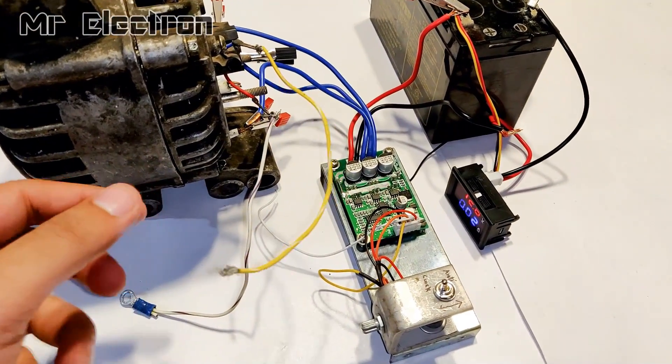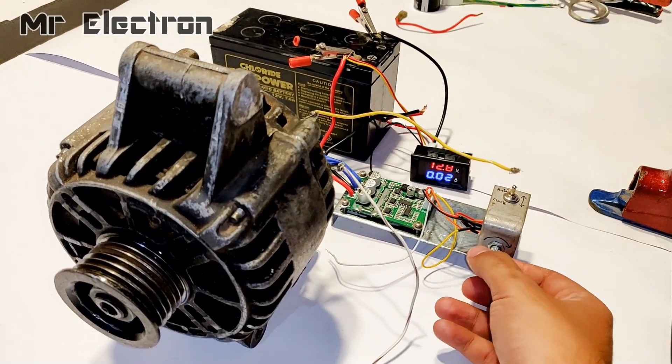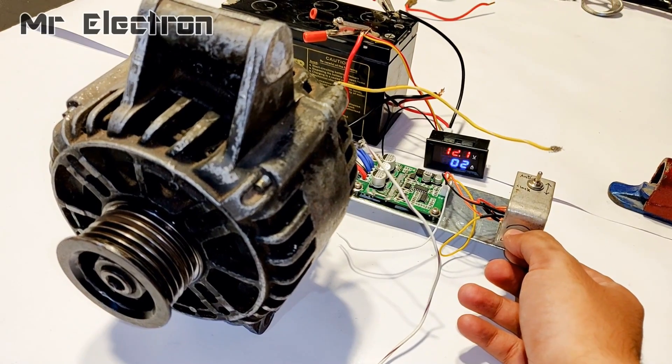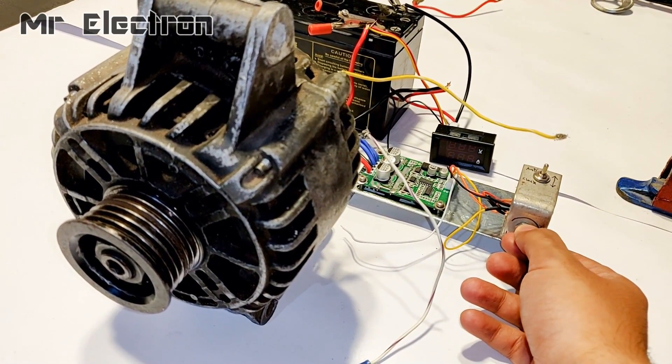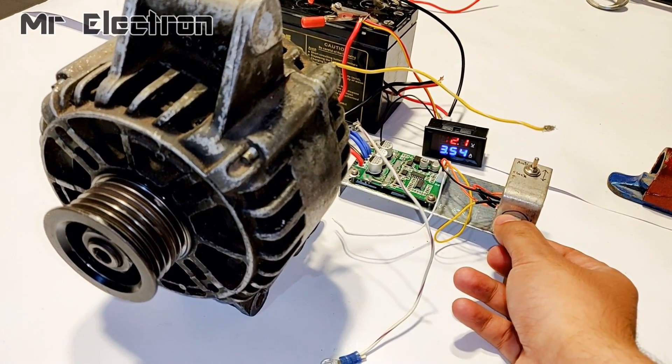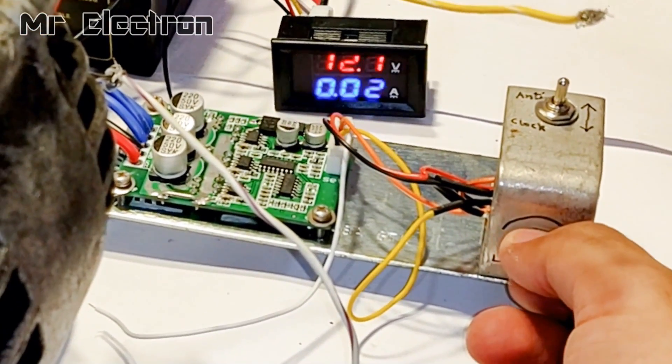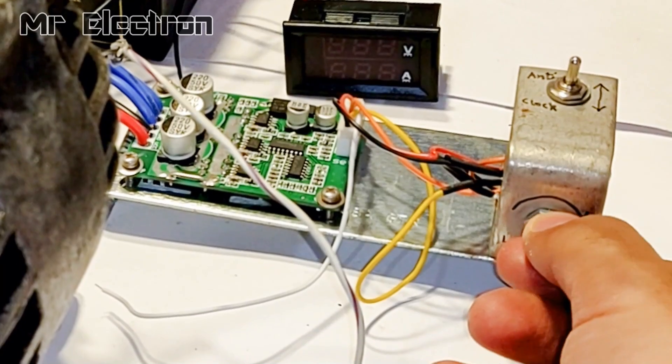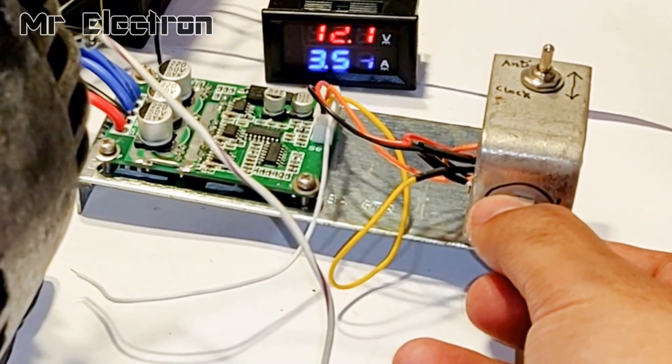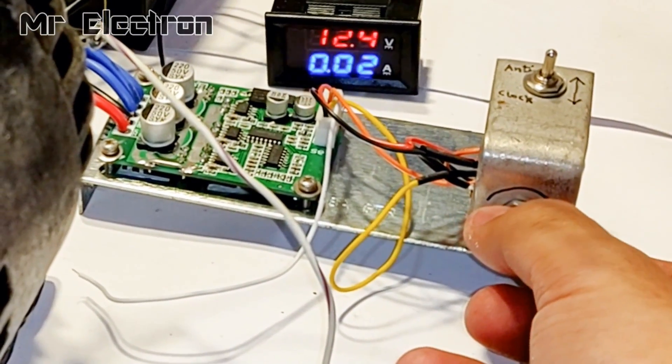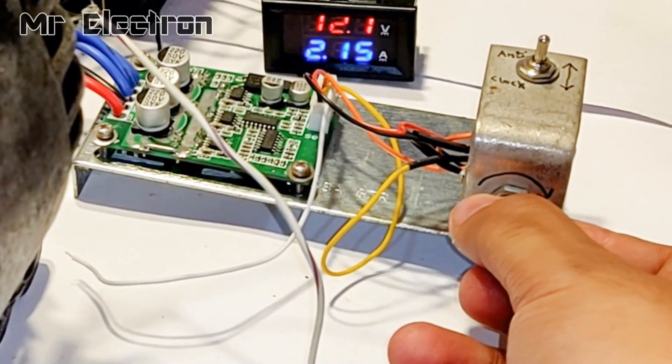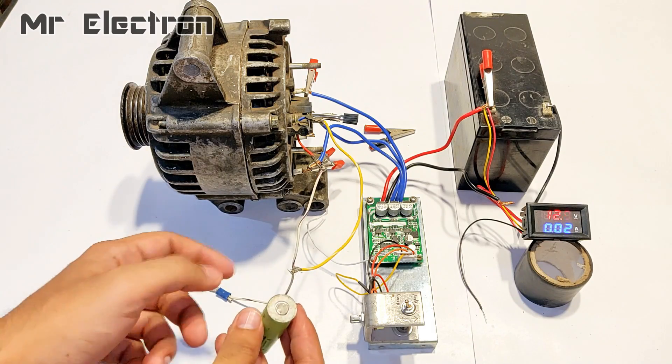So first I am going to test this situation. Let's try and turn the knob of the controller. You can see that the alternator rotor is shaking and the controller and multimeter is indicating that it is drawing huge amount of current and the alternator is not starting up. You can see the current is as high as 8 amperes.